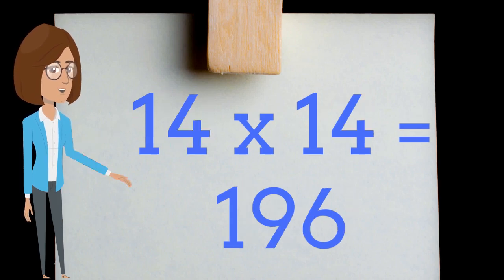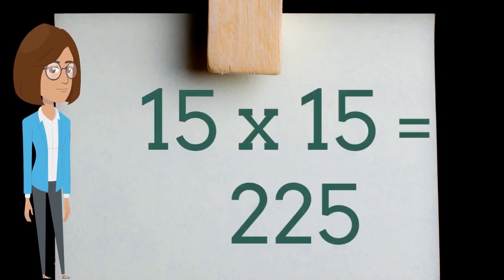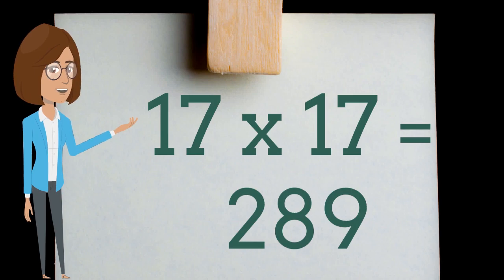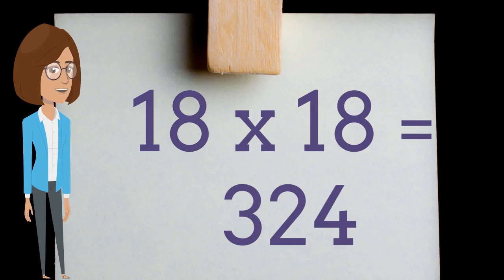Fourteen times fourteen is one hundred ninety-six. Fifteen times fifteen is two hundred twenty-five. Sixteen times sixteen is two hundred fifty-six. Seventeen times seventeen is two hundred eighty-nine.